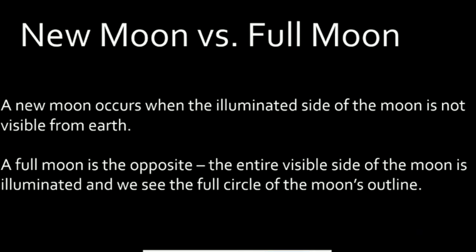So what's the difference between a new moon and a full moon? A new moon occurs when the illuminated side of the moon is not visible from earth. A full moon is the opposite — the entire visible side of the moon is illuminated and we see the full circle of the moon's outline.